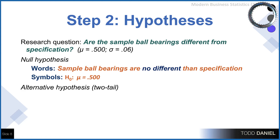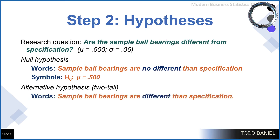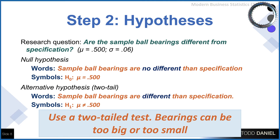That is the mean of the population. For the alternative hypothesis, knowing that we are doing a two-tailed test, we would say the sample ball bearings are different than specification — not indicating a direction of change — and in symbols H₁: μ ≠ 0.500. Why are we using a two-tailed test? Because changes in either direction we want to know about — they're both bad. If the bearings are too big or too small, either way they would be out of specification.